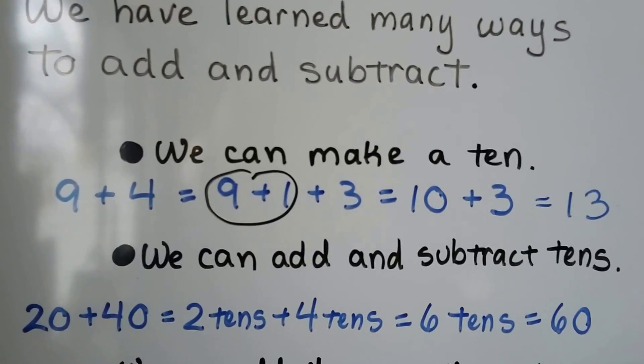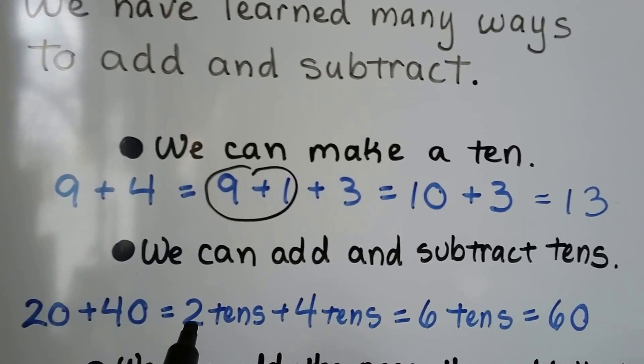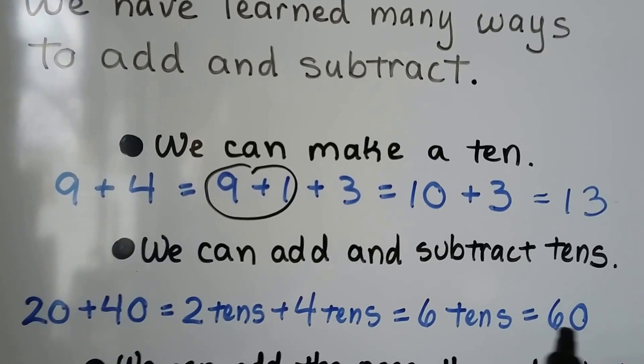We can add and subtract 10s. If we need to add 20 plus 40, that's 2 10s plus 4 10s. That makes 6 10s. That's equal to 60.